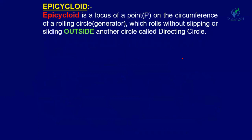The next one is the epicycloid. Epicycloid is a locus of point P on the circumference of a rolling circle or generator, which rolls without slipping or sliding outside another circle called the directing circle. You have to remember that the rolling circle rolls outside the other circle — if it rolls outside, it is known as an epicycloid.